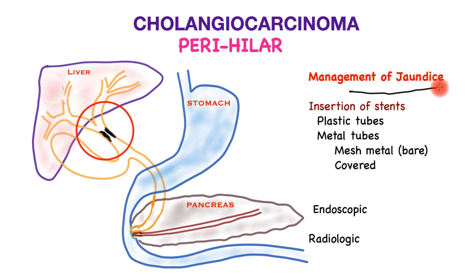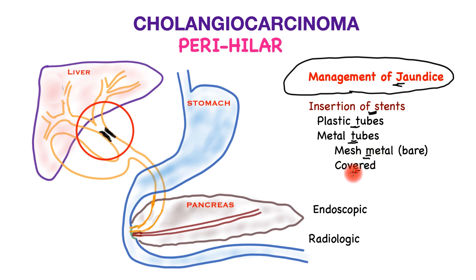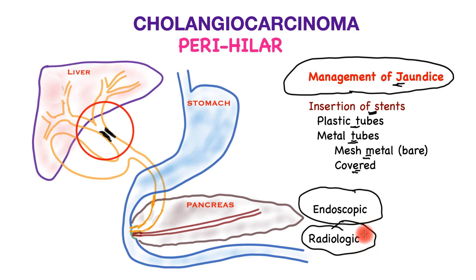One of the most important components of management is to treat jaundice, whether or not the tumor can be removed with surgery. Jaundice is typically treated by insertion of stents — tubes that lie within the bile tubes. There are two basic types: plastic tubes or metal tubes, which can be bare metal or covered mesh metal that springs open on insertion and may be removable. The approach is primarily either endoscopic or, more commonly, radiological depending on the treating unit. It is generally considered that perihilar cholangiocarcinomas do not lend themselves easily to treatment through the endoscopic route.